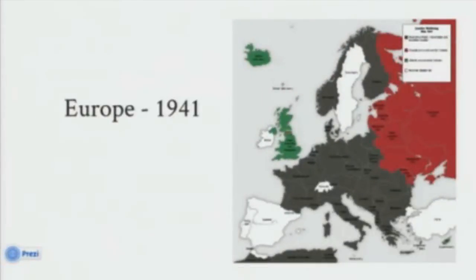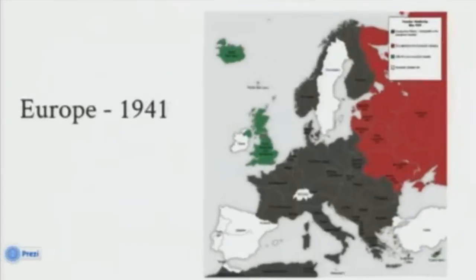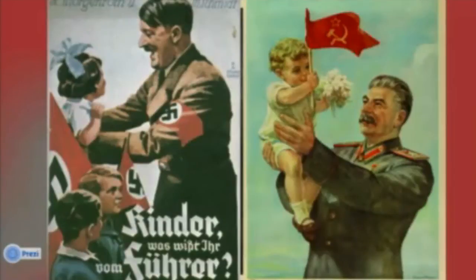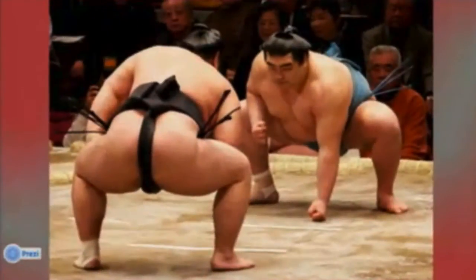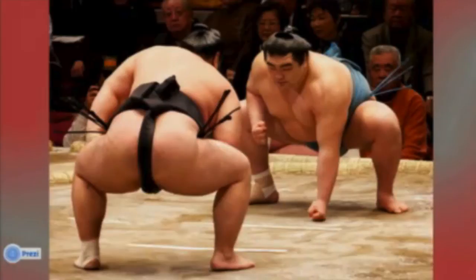To put you in the context, let's consider Eastern Europe, 1941. There are two homicidal maniac dictators which are very similar to each other. They have a peace treaty between them, and each of them is looking to attack and dominate the world. The geopolitical situation is something like this — it's very important for each of them to figure out the intentions of the other side.